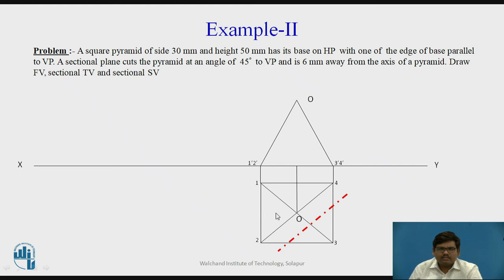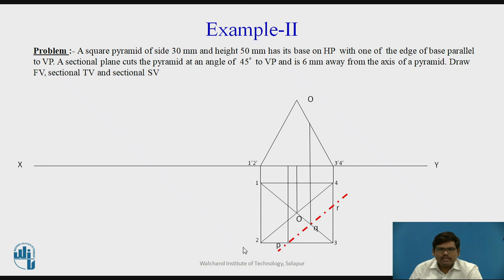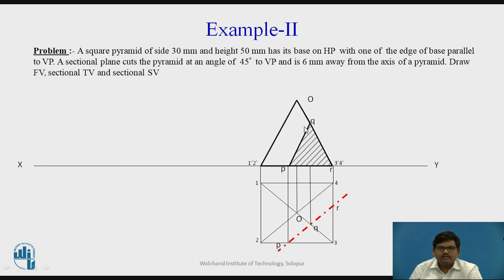This is 45 degrees. This is the axis point O, and from this we have measured 6 mm. The cutting plane cuts this base edge, this vertical edge, and this base edge, giving us three points: one on edge 2-3, one on edge O3, and one on edge 3-4. We name these points P, Q, R and project them into the front view. Point on 2-3 is projected at the base as 2'-3'. Point Q on vertical edge O3 is at O3' in the front view. Point on 3-4 is at 3'-4'. We join these points to get the sectional front view and darken the remaining part.